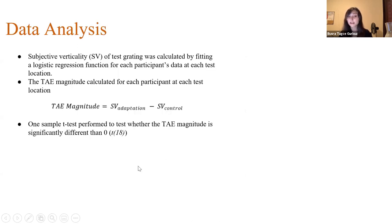For data analysis, we calculate subjective verticality of test gratings by fitting a logistic regression function. And then calculate the tilt after effect magnitude by subtracting subjective verticals of control condition from adaptation condition. And finally, we performed one sample t-test to test whether tilt after effect magnitude is significantly different than zero.